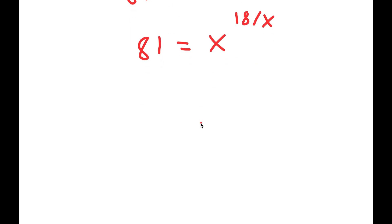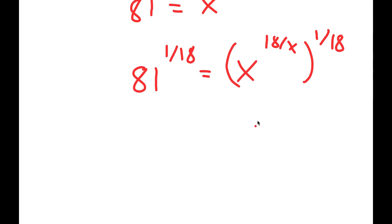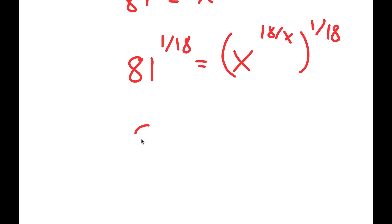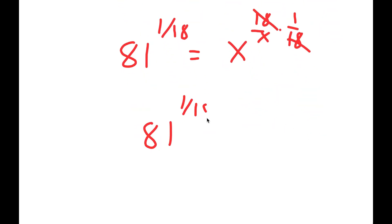Now I'm going to take the power of 1 over 18 on both sides. So I get 81 to the power of 1 over 18 is equal to x to the power of 18 over x to the power of 1 over 18. This is the same thing as 81 to the power of 1 over 18 is equal to x to the power of 18 over x times 1 over 18. These two 18s cancel out, so I get 81 to the power of 1 over 18 is equal to x to the power of 1 over x.